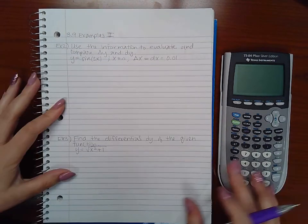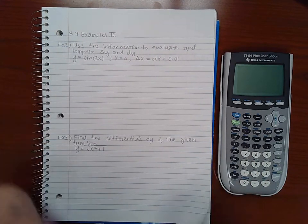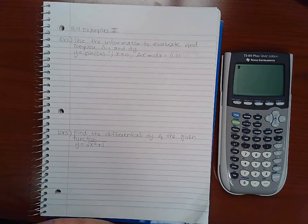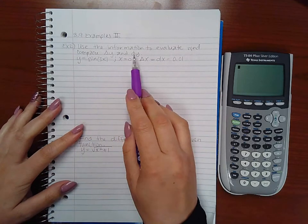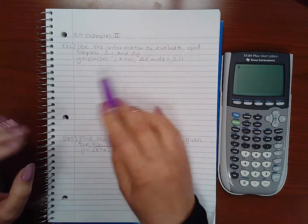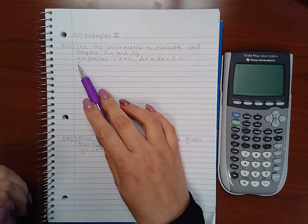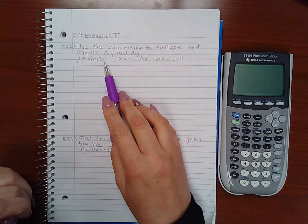This is examples part 2 for section 3.9. It says use the information to evaluate and compare delta y with the differential dy. And the equation they want us to use is sine of 3x.